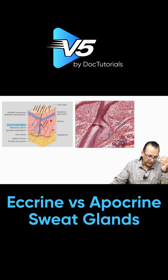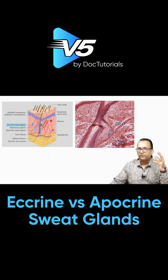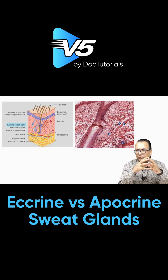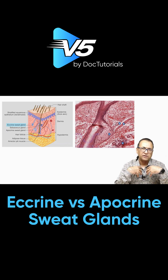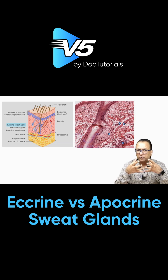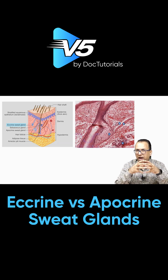Moreover, apocrine sweat glands are very few in number. If somebody is asking where you find apocrine sweat glands, you say they are limited — like in the axilla with the hair follicles, at the perinipple level with the hair follicles, and in the perigenital and perianal region. So in the perineum, you can have hair, and along with that you have the apocrine variety of sweat gland.